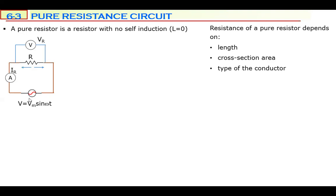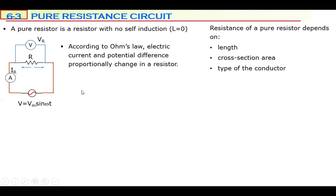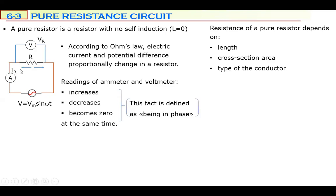In AC, the potential difference of the generator is continuously changing, which means the potential difference on the resistor also continuously changes. According to Ohm's law — R equals V divided by I — electric current changes proportionally. As V increases, I must increase; as V decreases, I must decrease; as V is zero, I must be zero.